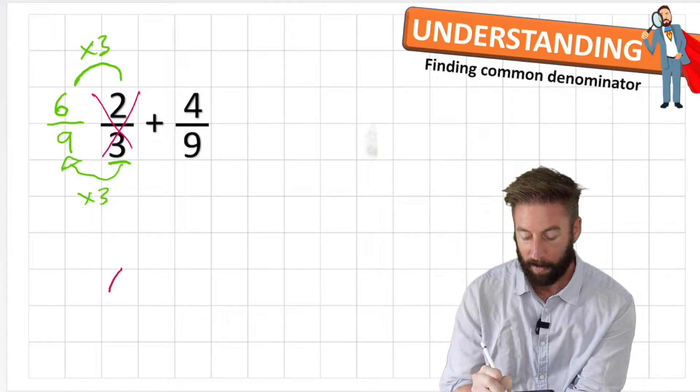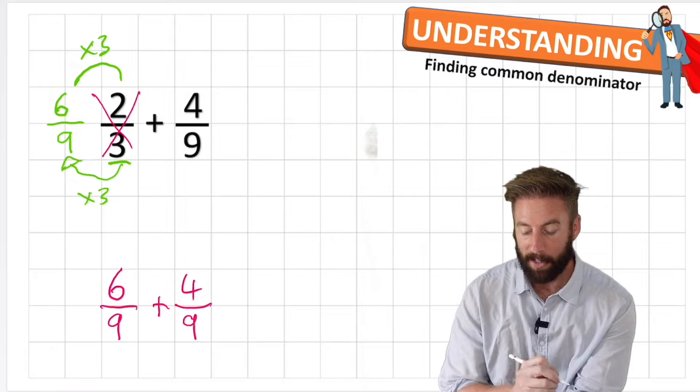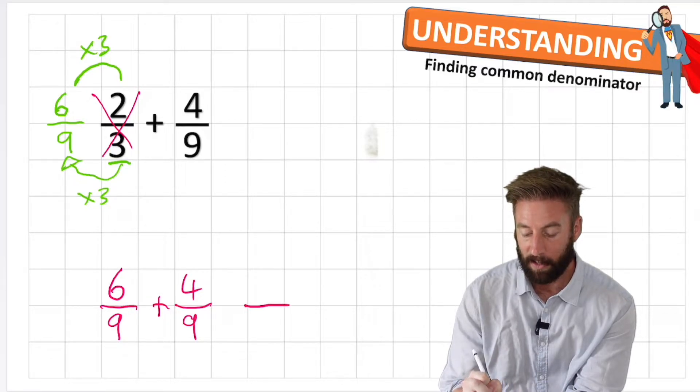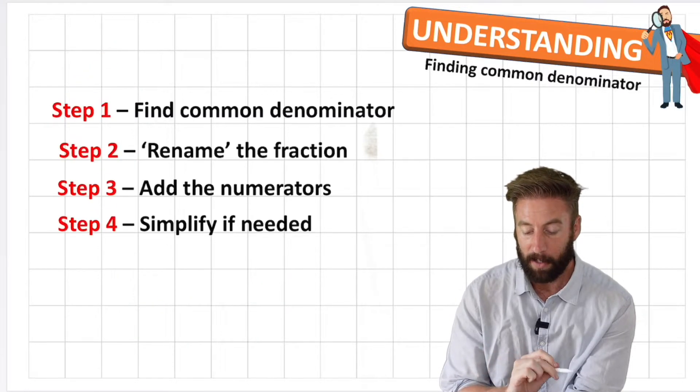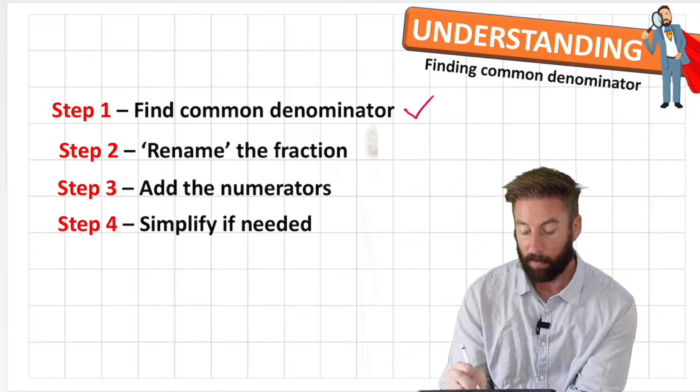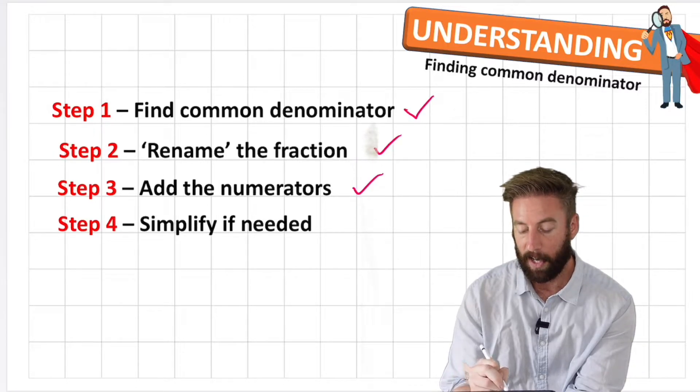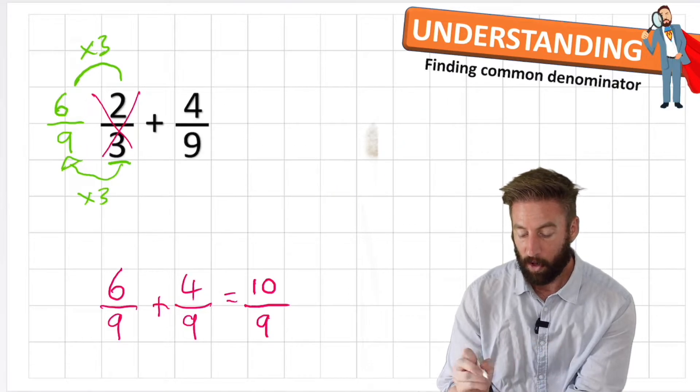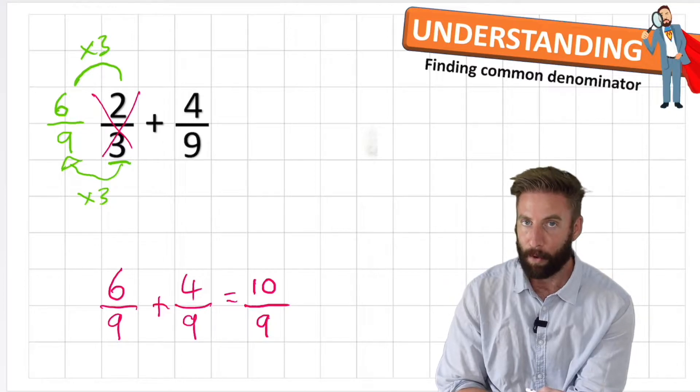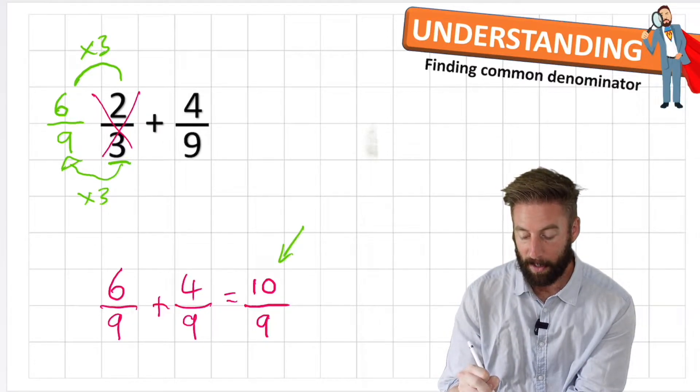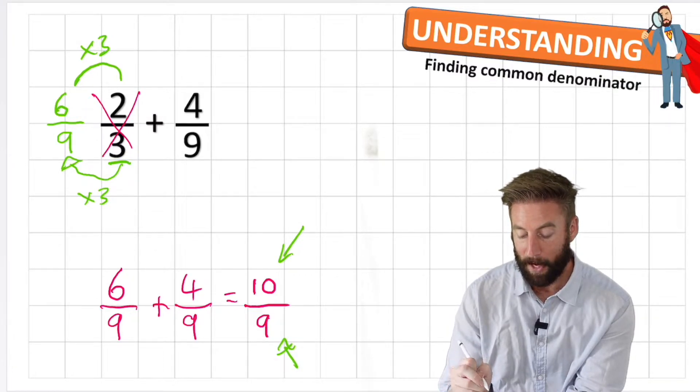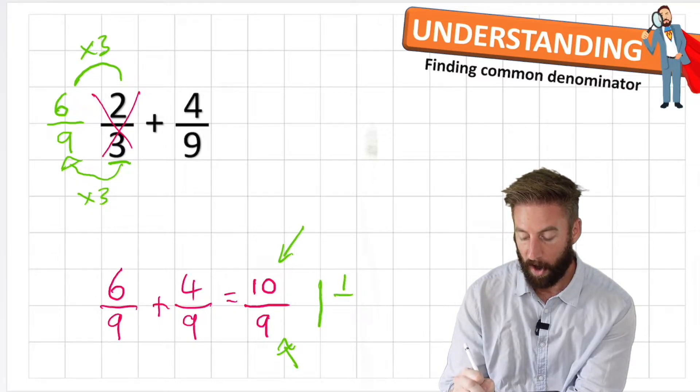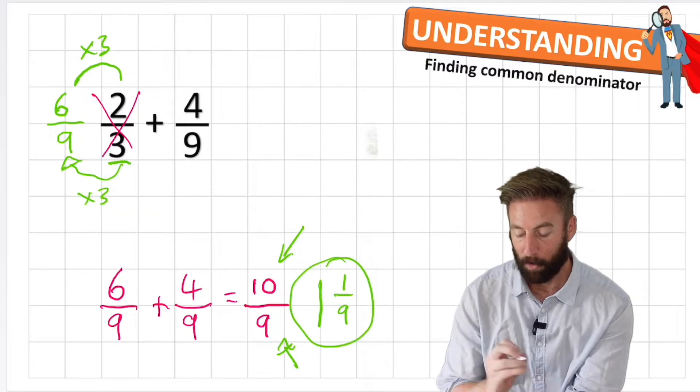I'm going to tidy it up and bring it down here. Now I can look back to the previous lesson of adding fractions with the same denominator and I realize that I'm working in ninths. So my answer will still be in ninths and all I need to do is add my numerators. 6 plus 4 is 10. Let's check my steps. I found the common denominator, I renamed the fraction, I added the numerators and now simplify if needed. Well this fraction is actually an improper fraction because we have a bigger numerator than denominator. So I can turn this into a mixed number by dividing 10 by 9 and that's going to give me 1 and 1/9.